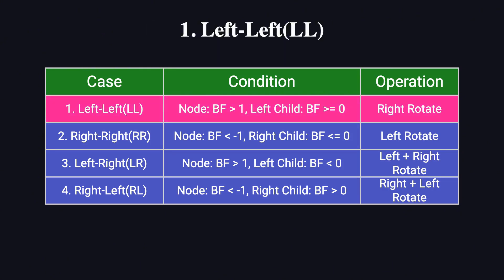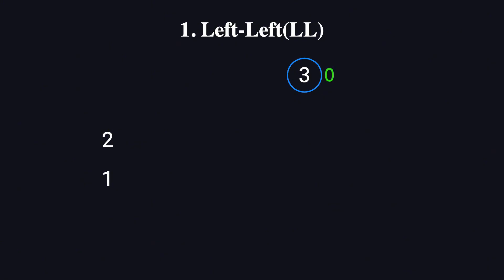Let's start with the first case: LL, or left-left. Imagine we insert the values 3, 2, and 1 sequentially. After inserting 3, the tree has only one node, so its balance factor is 0, meaning the tree is balanced. Next, we insert 2. Since 2 is less than 3, it becomes the left child of 3. Now node 2 has a balance factor of 0, and node 3's balance factor becomes 1 — the tree remains balanced.